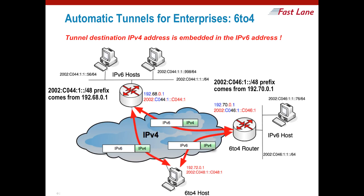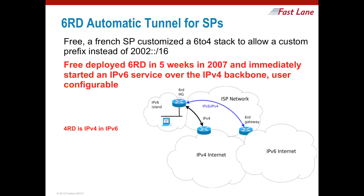To access the IPv6 internet, public 6to4 relays are provided, but since this is a fixed prefix, the public relays are not controlled by the customer and cannot be used by a service provider. So a service provider came up with the idea to customize this prefix to make it possible to deploy a service, because the prefix would no longer be 2002 but could be customized for each service provider.